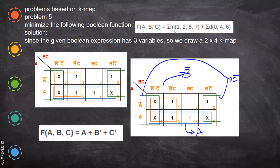Let us take another example: 0, 2, 5, 7 with don't cares 0, 4, 6. Again, it needs only a three-variable K-map. When you substitute ones in the respective positions and X in the respective positions, you can form a quad here, another quad here, and another quad here. When you reduce for this, you have the equation B bar — because A, A bar is gone and C, C bar is gone — so we have B bar.